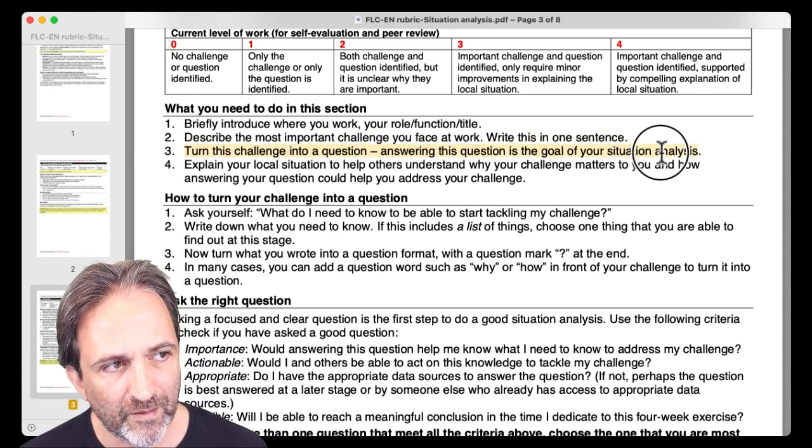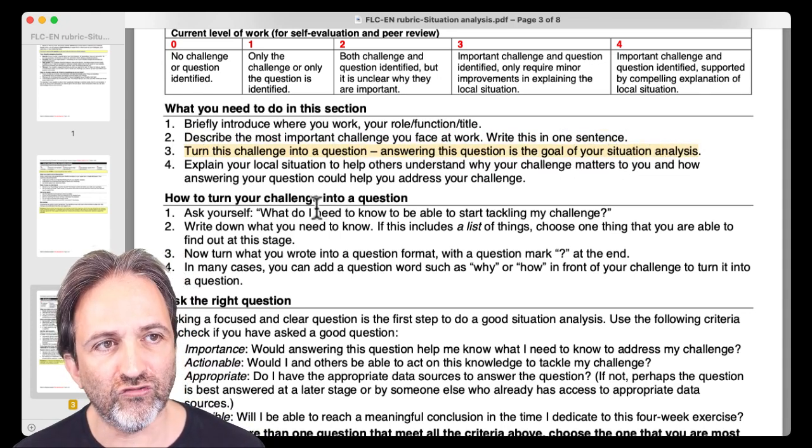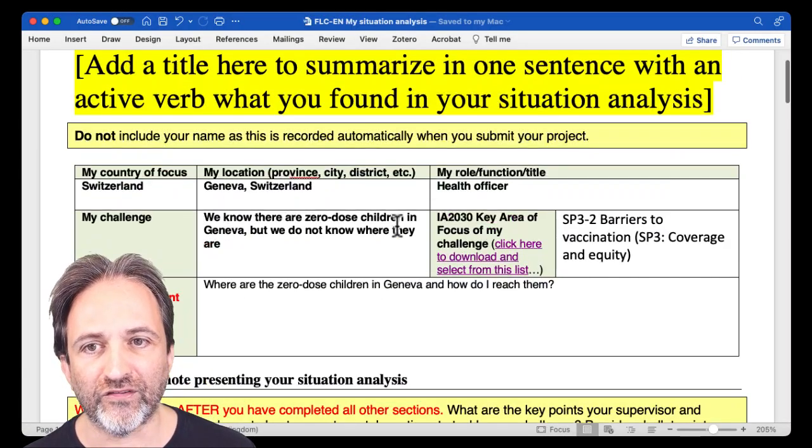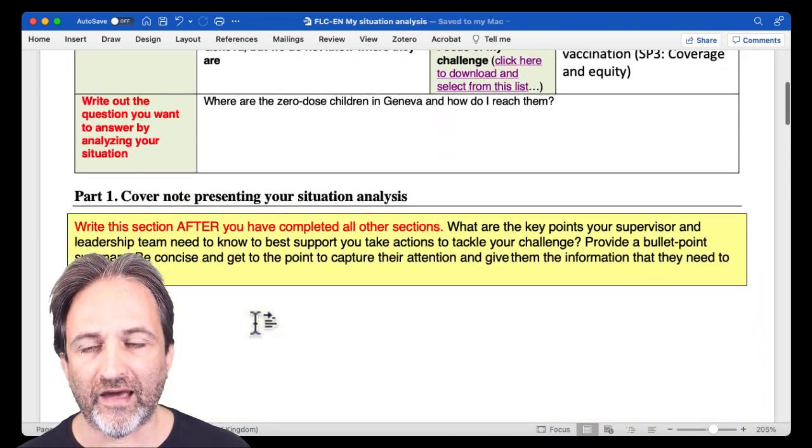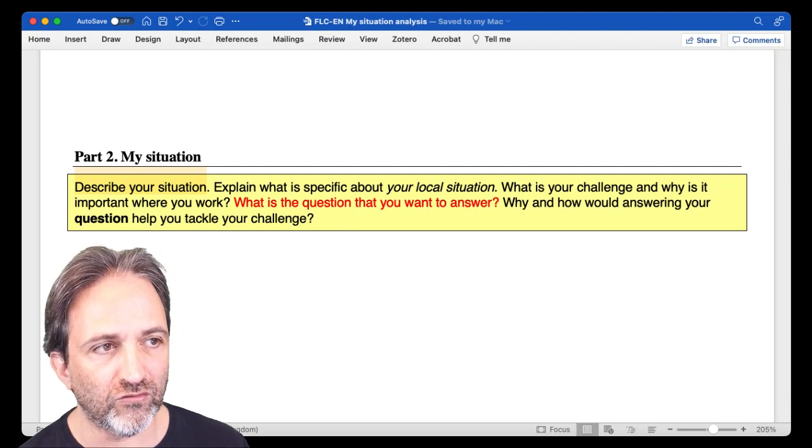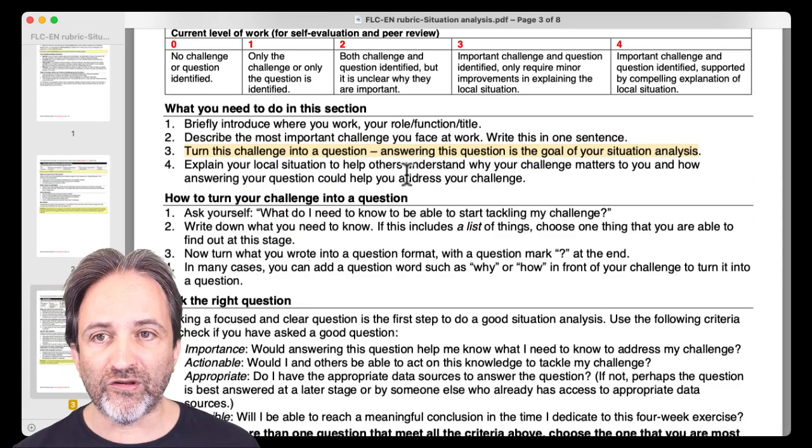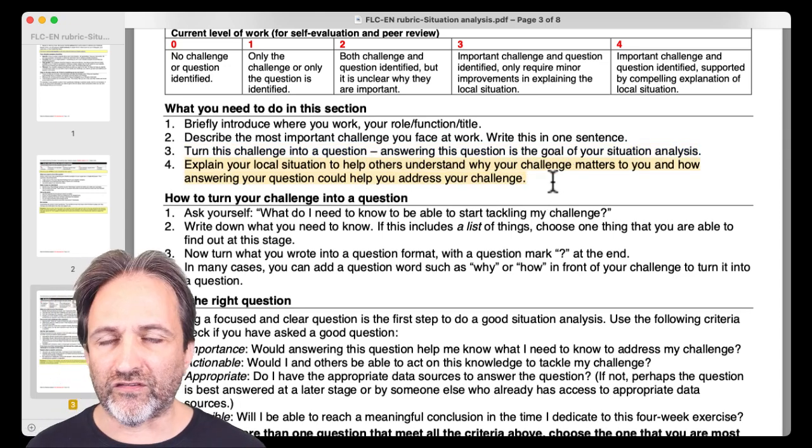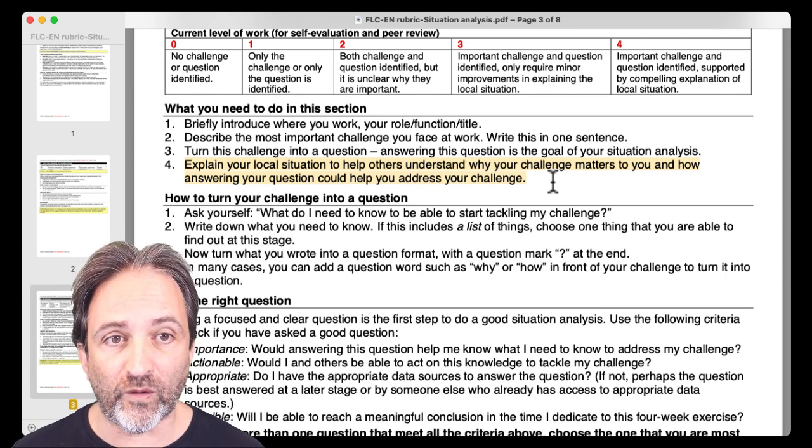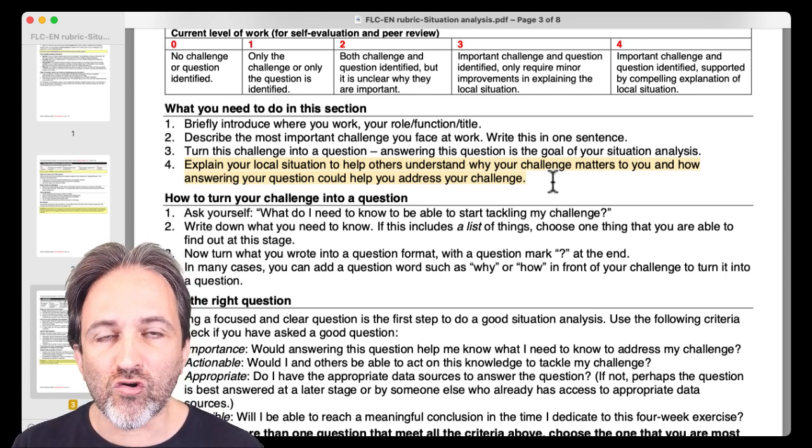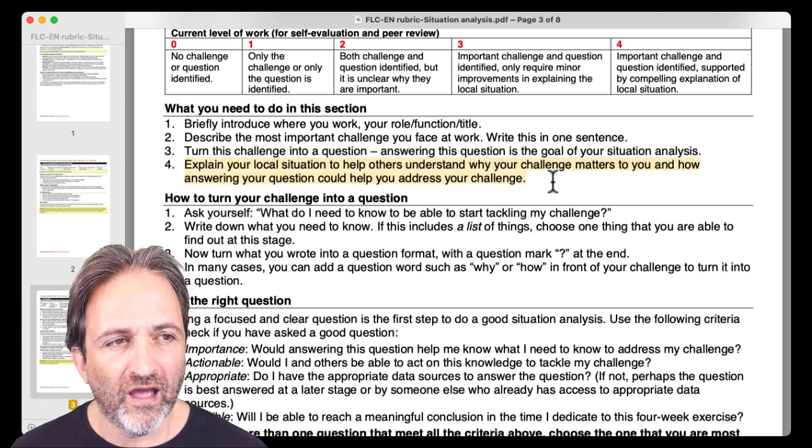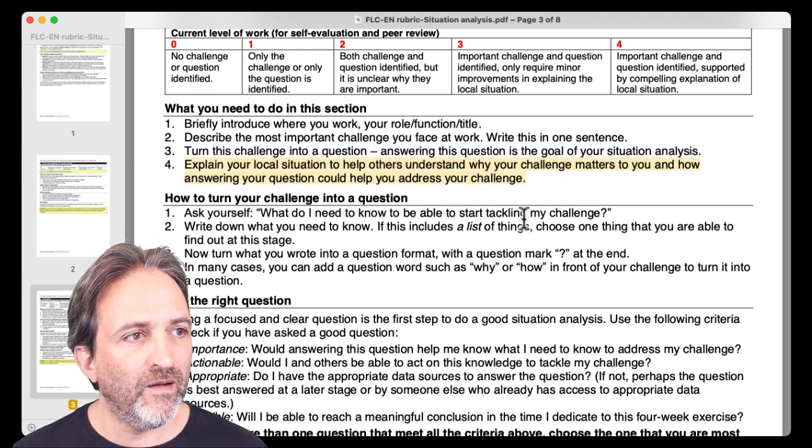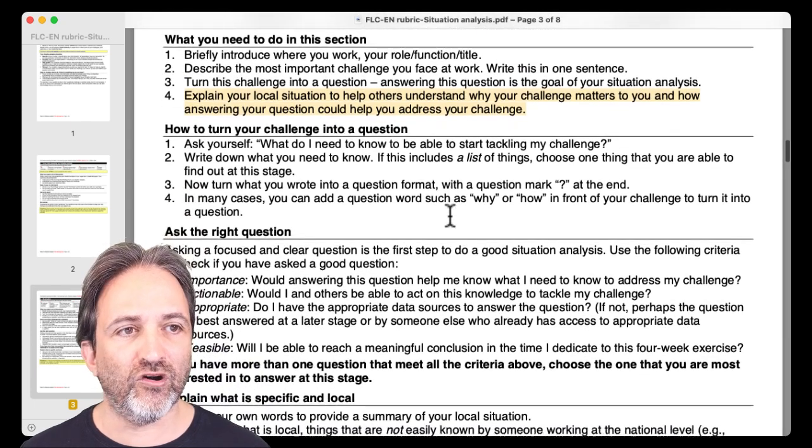And now, key step is step three, turning your challenge into a question. And answering this question is the goal of your situation analysis. So again, you've done this in the box. You've read out the question you want to answer by analyzing your situation. But as you build, describe the description of your situation, probably you're going to want to, again, restate that question. And then step four is actually key. So what is your local situation? We don't know what's going on where you work. You do. You have local expertise because you work there every day. And so tell us, explain it to us to help us understand why your challenge matters to you and how answering your question could help you address your challenge.